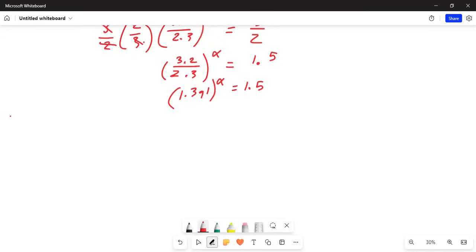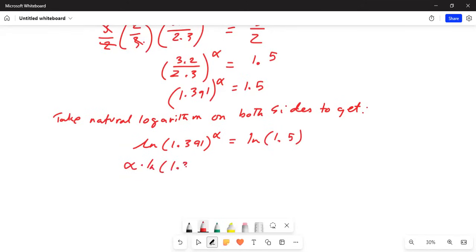We will take natural logarithm on both sides to get ln 1.391 exponent alpha equals ln 1.5. If I use the exponent rule of logarithm, this becomes alpha times ln 1.391 equals ln 1.5.